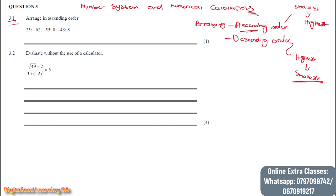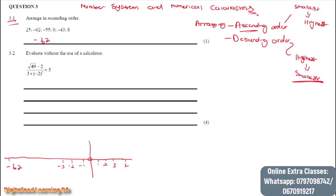We are arranging from smallest to highest. Numbers that have negative signs are the smallest numbers. So the smallest in this case is going to be negative 62. If we have our number line, we have zero here, and then we have one, two, three, four, and here we have negative one, negative two, negative three, and so on. Then we have negative 62, so we can easily see that the smallest will be negative 62.